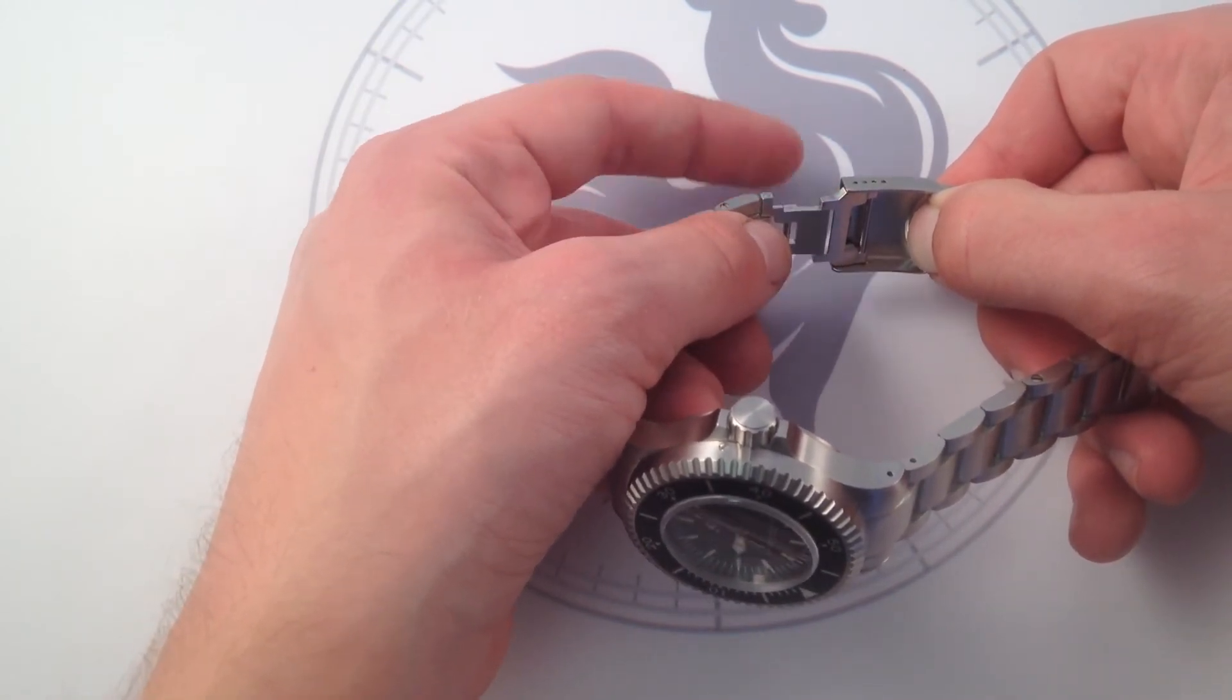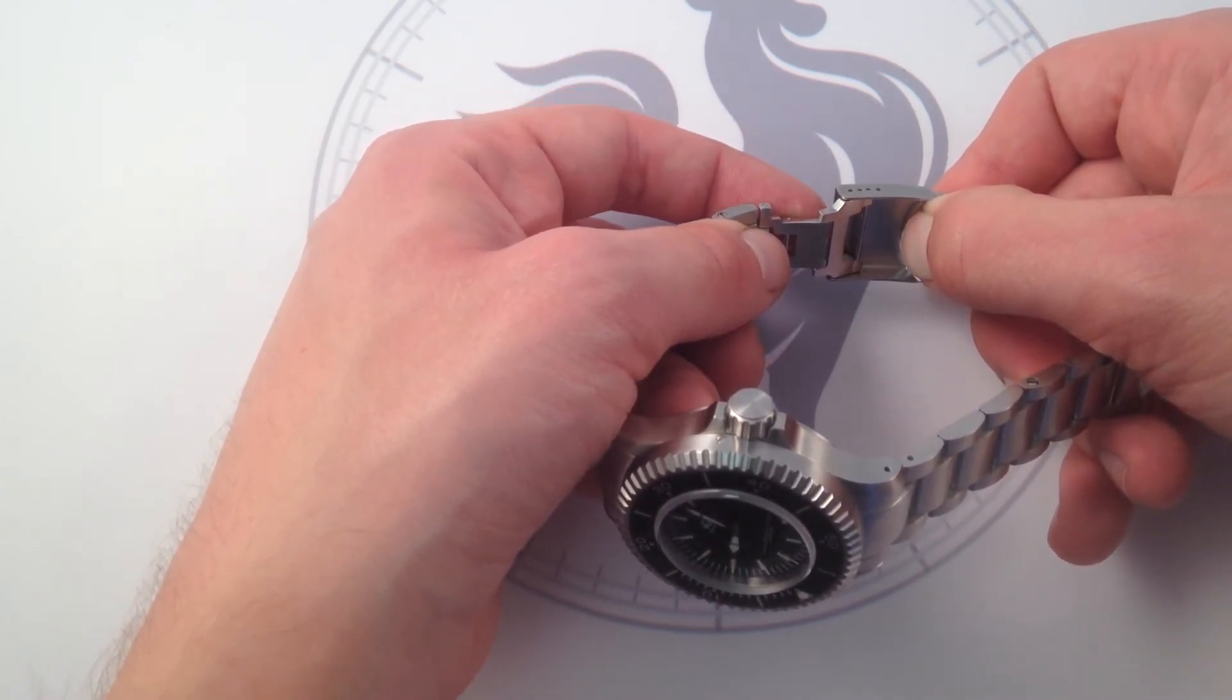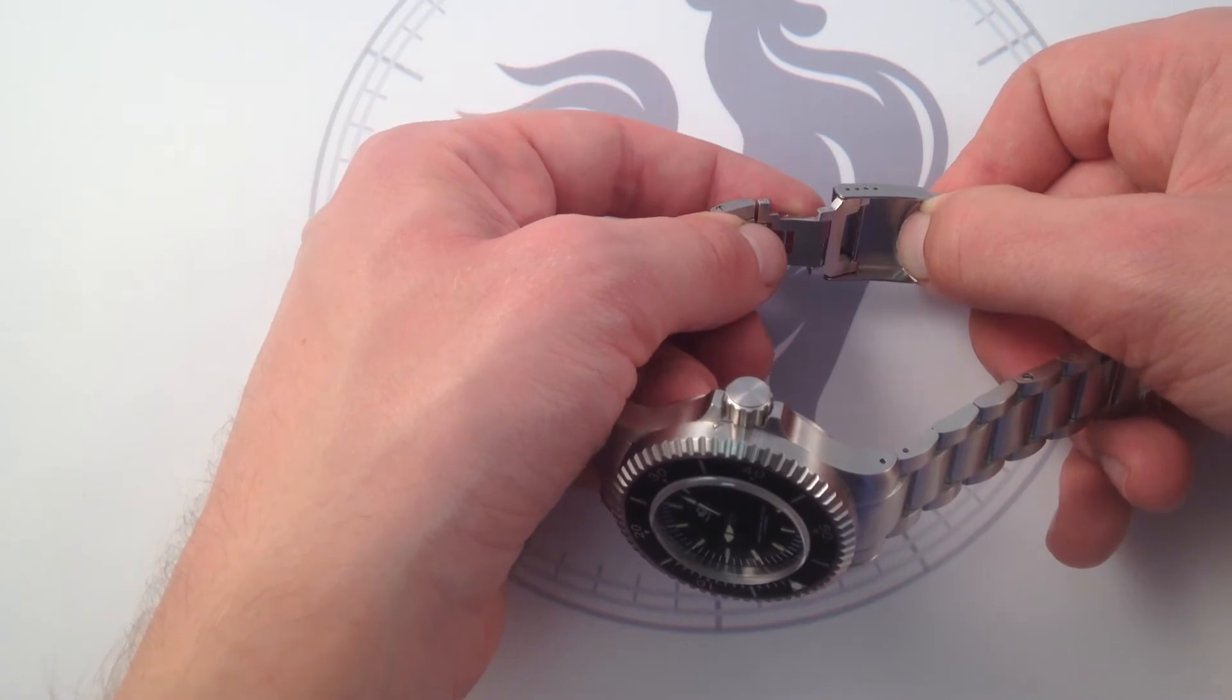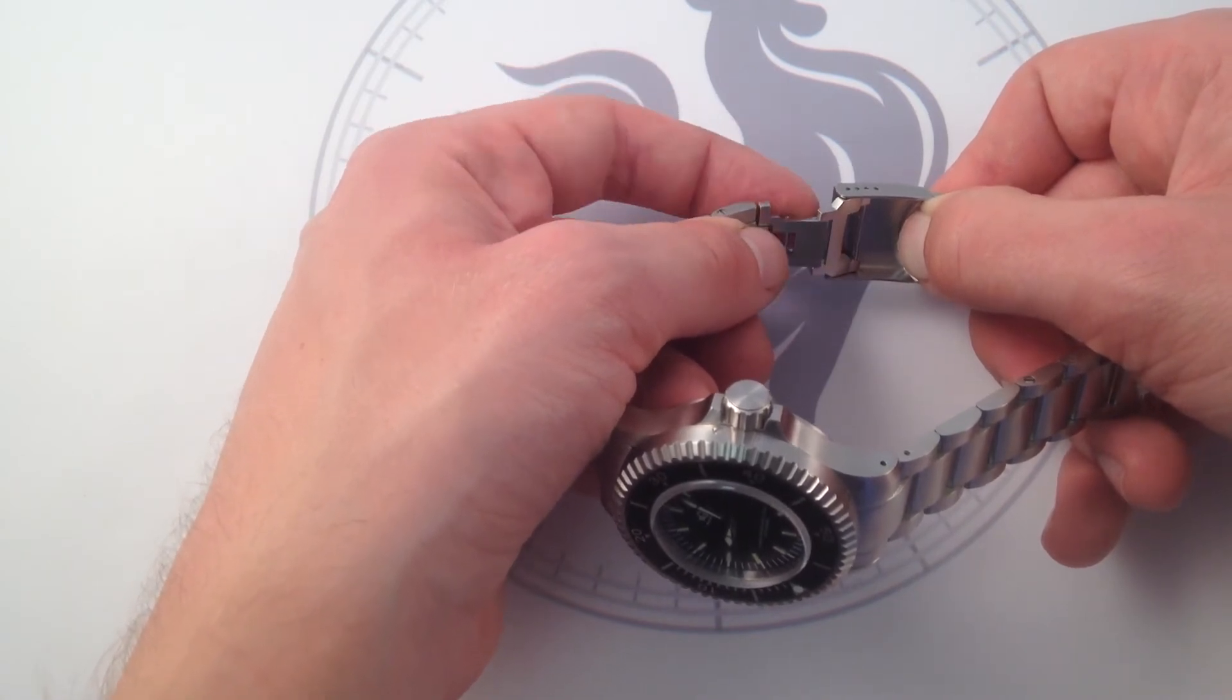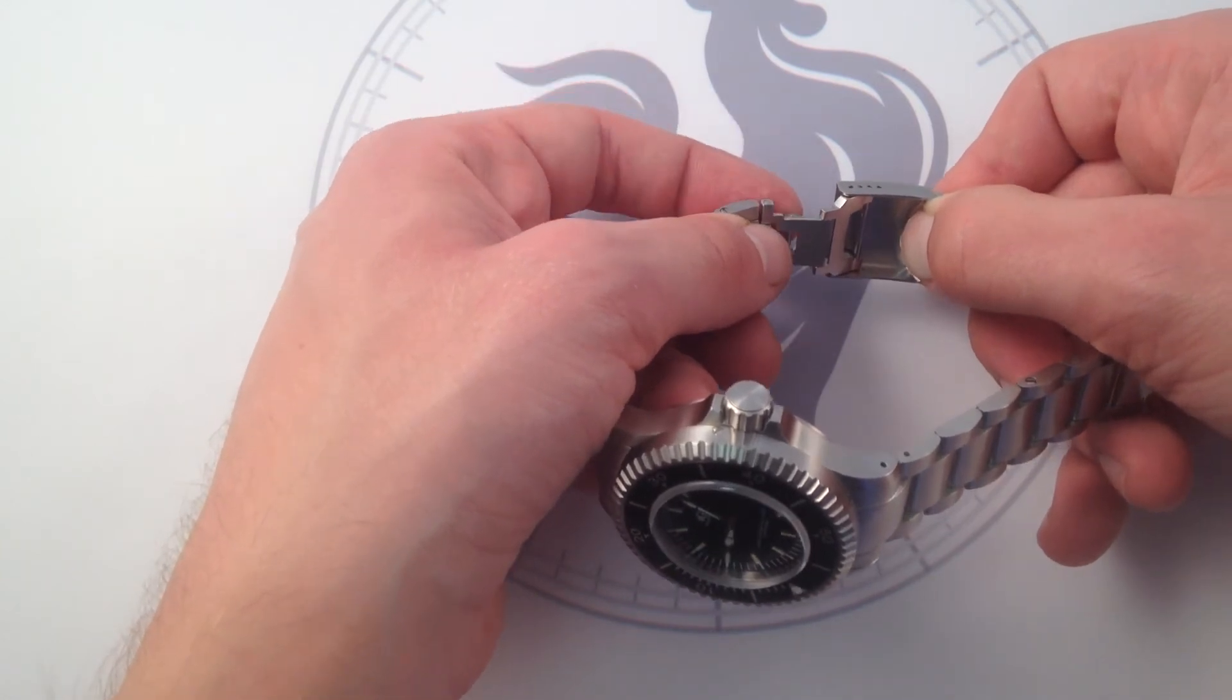You can always tell the quality of a dive watch from the caliber of the clasp and the dive extension, because those are almost like the canaries in the coal mine for quality issues, for short-sided or corner-cutting assembly. There's none of that here.